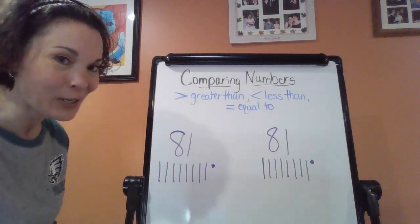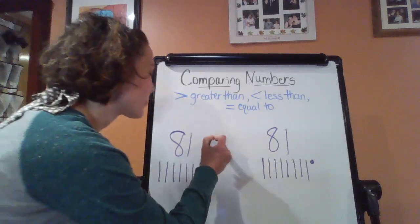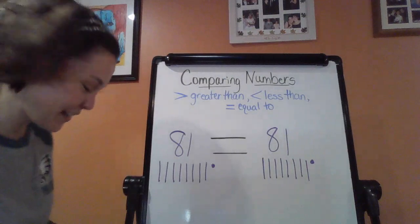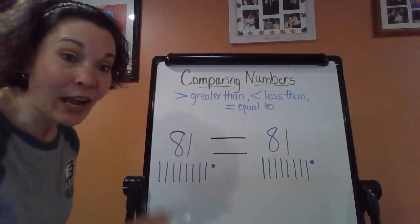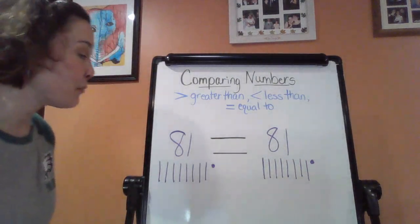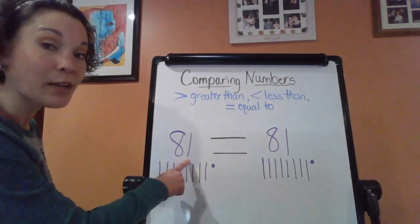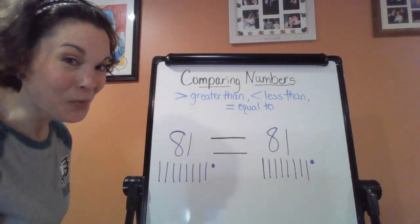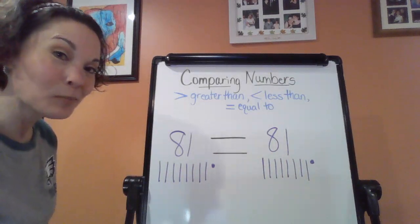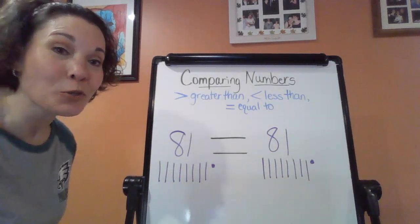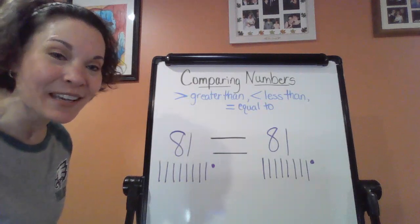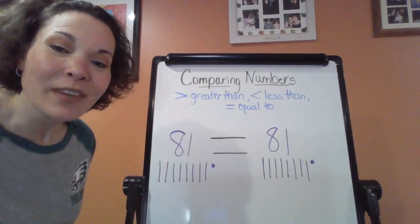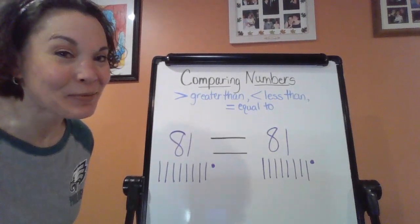So there's one symbol that we could use, though. The equal sign. So how I read this is 81 is equal to 81. Well, boys and girls, I hope you liked our little tutorial about comparing two-digit numbers. As I always say, please practice at home. And until then, I'll talk to you all again soon. Bye, everybody.